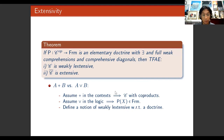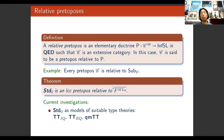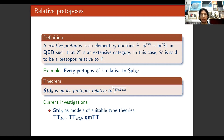The first result is a characterization of those elementary doctrines whose elementary quotient completion gives a locally Cartesian closed category — a theorem also proved independently by Maietti, Pasquali, and Rosolini, with equivalent but differently stated conditions relying on different notions of weak exponential. The second result characterizes those elementary doctrines whose elementary quotient completion gives an extensive category. To do this, we defined a notion of relative pretopos: an elementary doctrine B with well-defined quotients whose base category is extensive, so that C is a pretopos relative to B. We proved our theorem applies to the base of F_ML, yielding the corollary that the category of homotopy setoids is a locally Cartesian closed pretopos relative to the elementary quotient completion of F_ML.